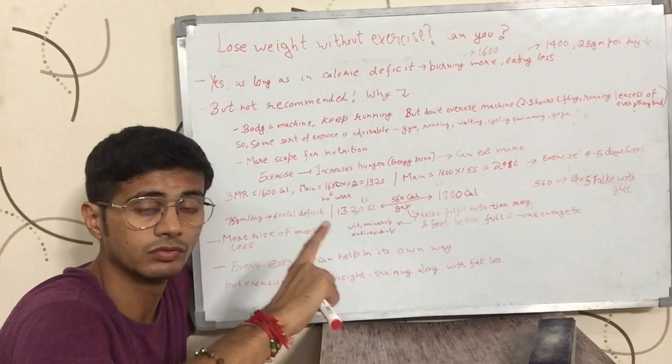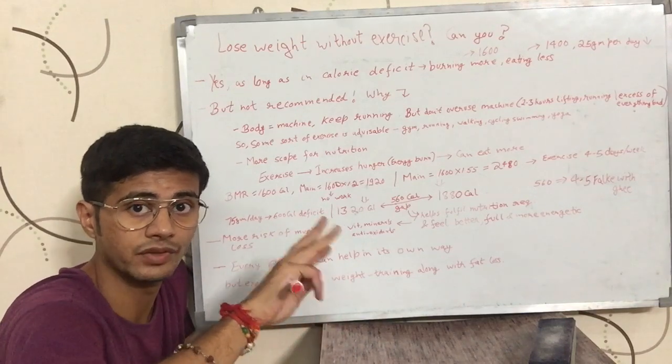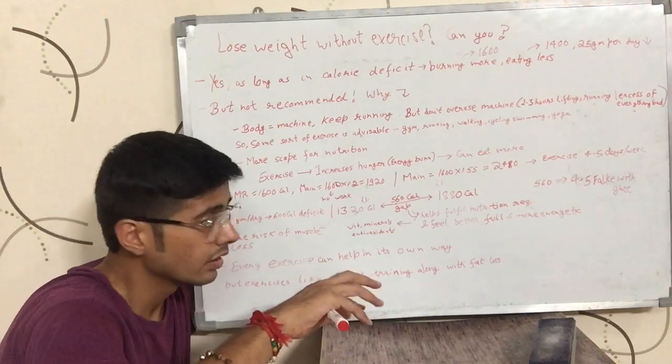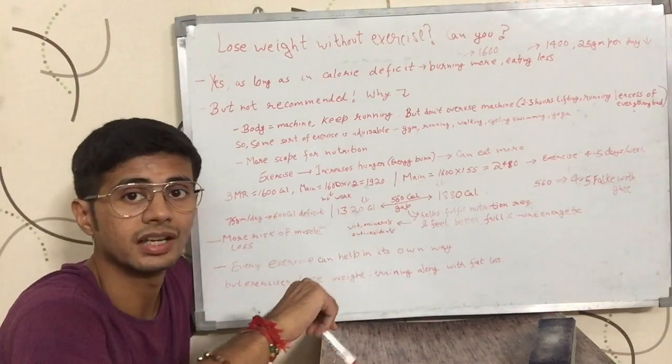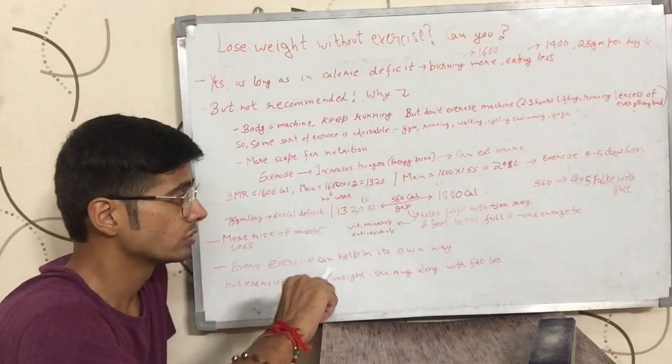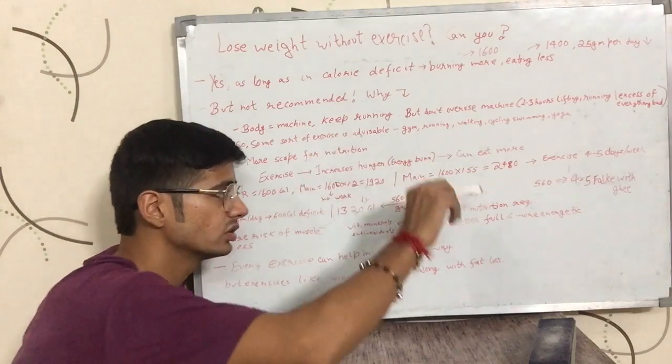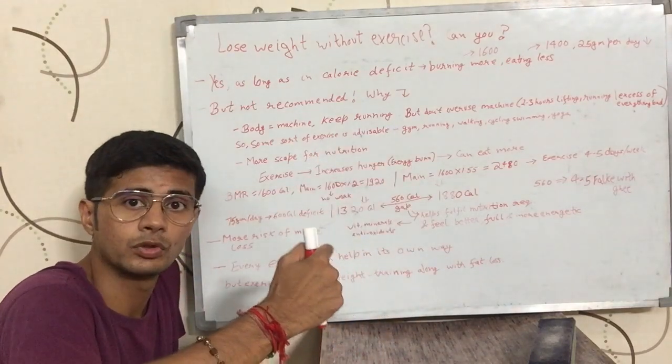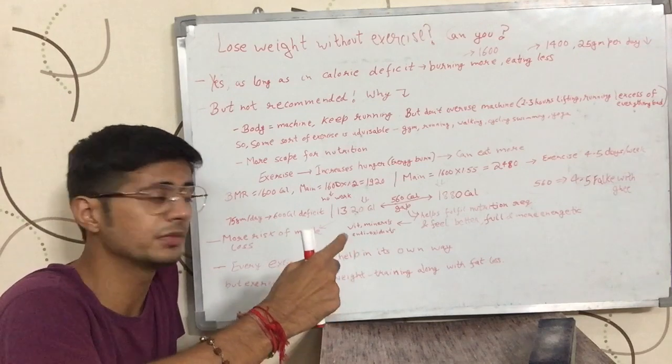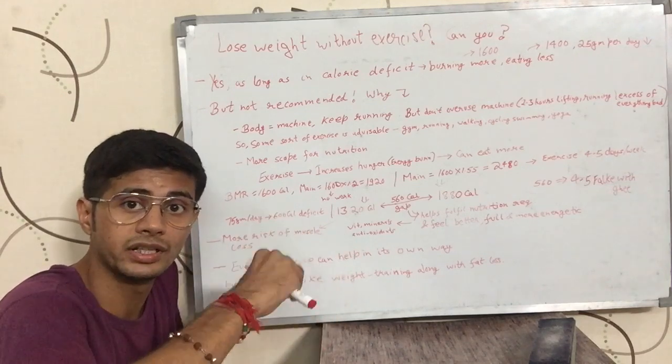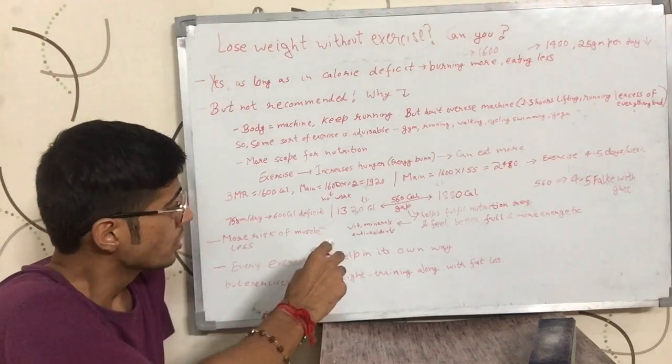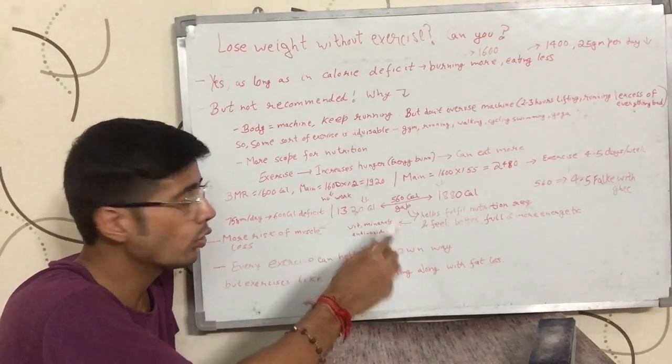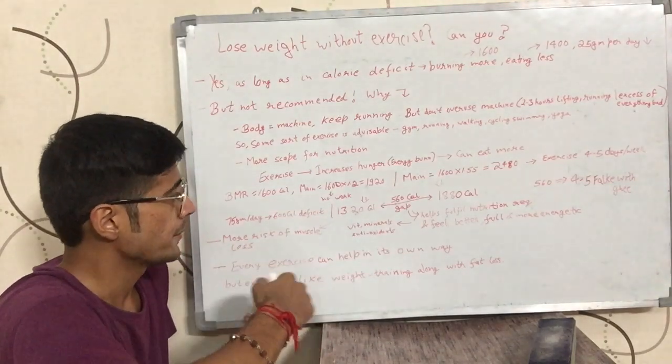If you want to get an estimate of what 560 calories means, that is around 4 to 5 chapatis with ghee, with 1 teaspoon ghee, weighing 3 grams of ghee. 4 to 5 medium-sized chapatis, that is what 560 calories are. So you do not want to miss it. And along with those calories, what you get is protein, carbohydrates and fats and vitamins and minerals and antioxidants to meet your nutrition requirement for the day. So basically, you have more scope of getting nutrition in.